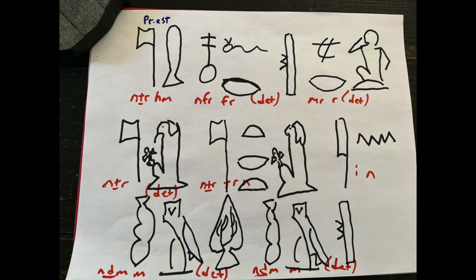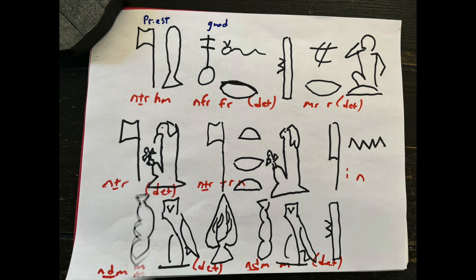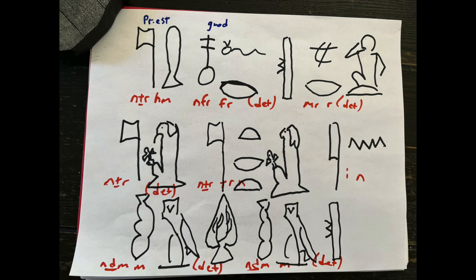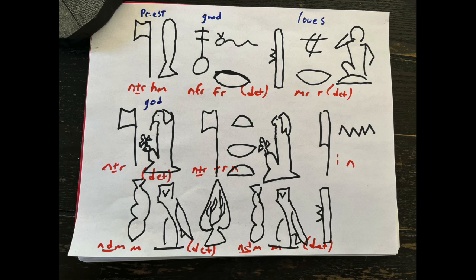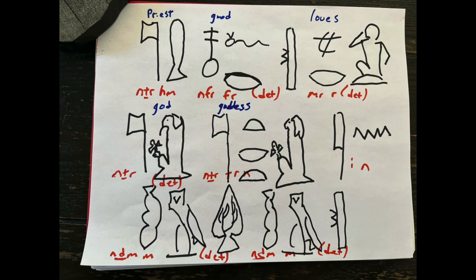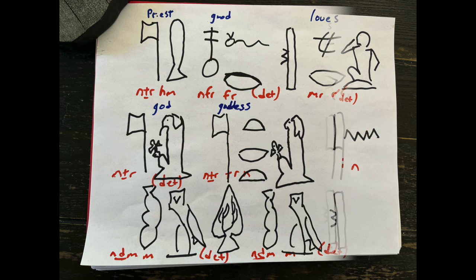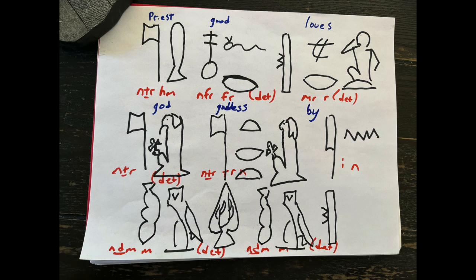Now we can start translating. The first word is netter hum, or hum netter as it would be pronounced - priest - because of honorific transposition. It's one of those glyphs that always gets transposed. The netter flag glyph is a symbol of royalty. Next is good, then loves. So we have the good priest, or a good priest, loves. What does the good priest love? We've got two proper nouns coming up - god, which is the symbol of divineness, a flag next to a god holding an ankh.